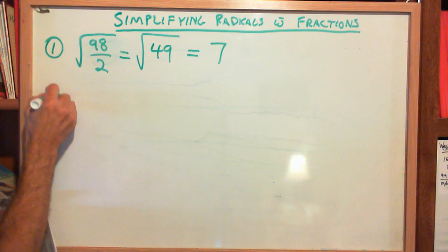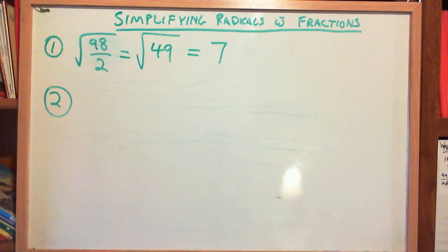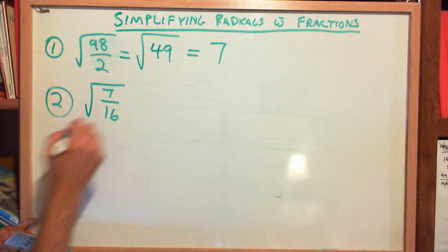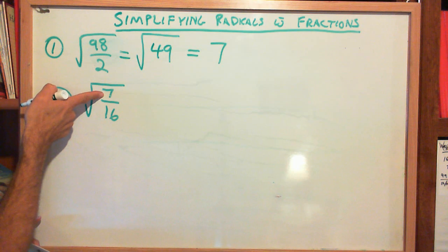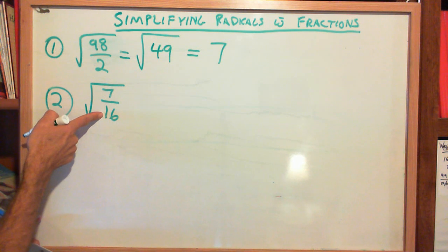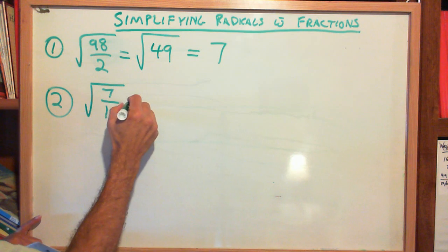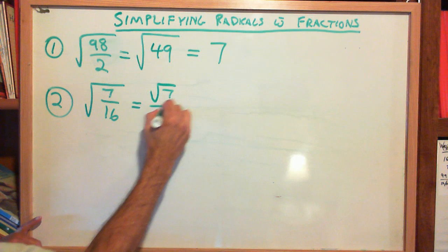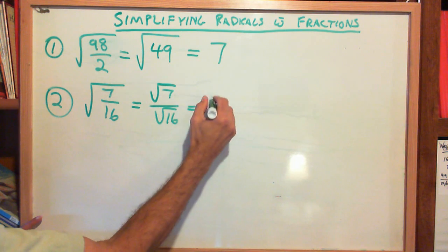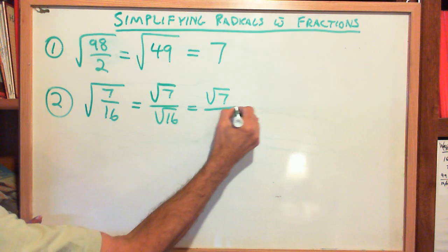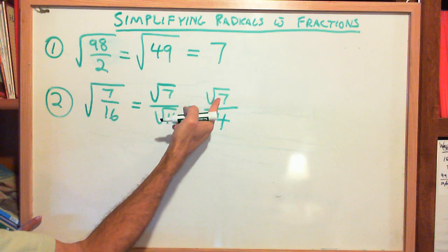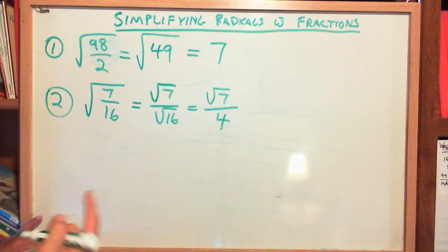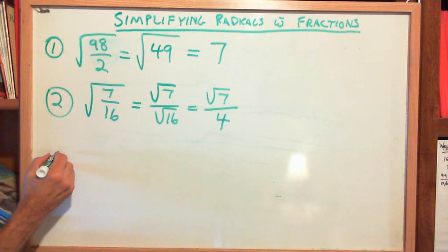Example 2: the square root of 7 over 16. Is 7 a perfect square? No. Is 16 a perfect square? Yes, it is. So I'm going to separate this into the square root of 7 over the square root of 16, which gives me the square root of 7 over 4. There's nothing else I can do, since no perfect square other than 1 goes into 7. That's my answer.